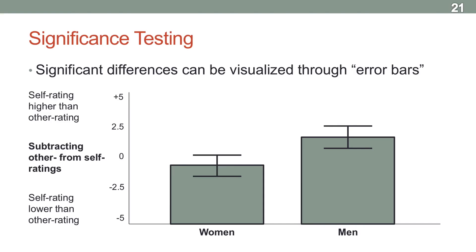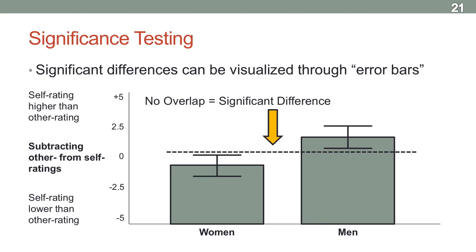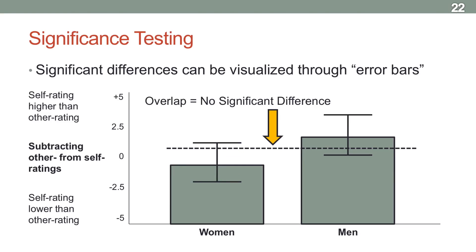One way to quickly visualize whether there's a significant difference between two groups is through error bars — something you'll often see in journal articles. They show the two group means, plus annotations that show our best guess for what the mean of these groups would be in the larger population. As a general rule, if the error bars do not overlap — so the top of the women's error bar is still below the bottom of the men's — then there's likely a significant difference. If they do overlap, there probably isn't.